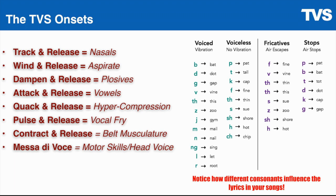Pulse and release is the vocal cry or vocal fry onset that elongates the vocal folds, adds medial compression, and helps us get into the habit of singing with cry vocal mode. Contract and release is a unique, specialized onset with its own training workflow designed for building the belt voice and the head voice. So if you want your high notes to sound chesty and not falsetto-y, this is one of the onsets that will help you build that. Messa di voce is another specialized onset with a training workflow sequence designed to help you build the motor skills of the little muscles inside your larynx.